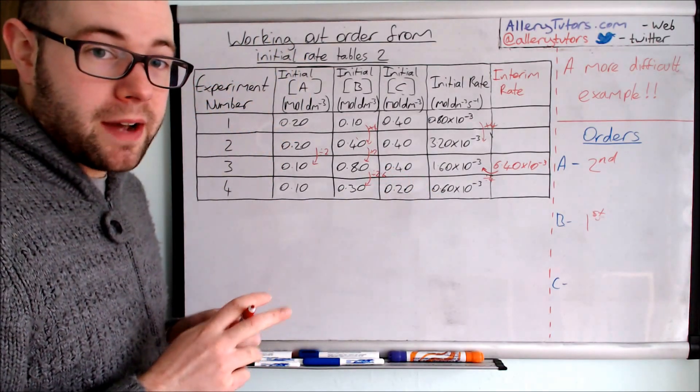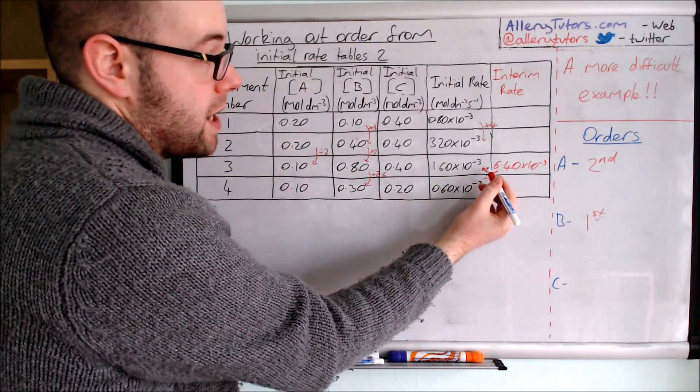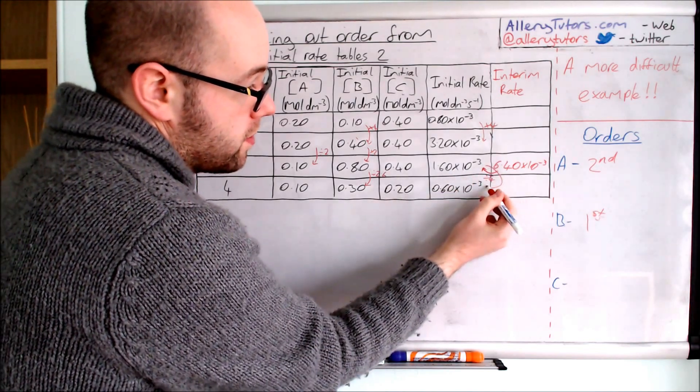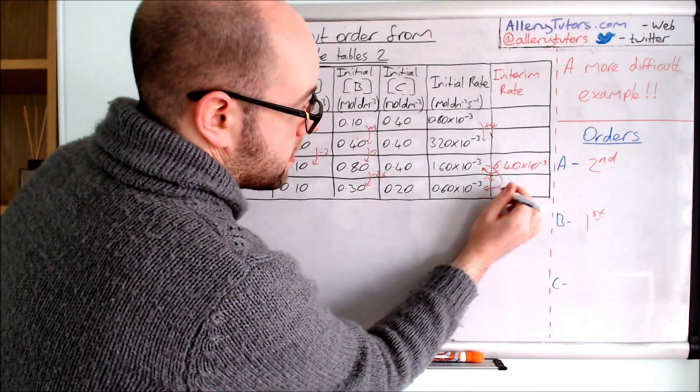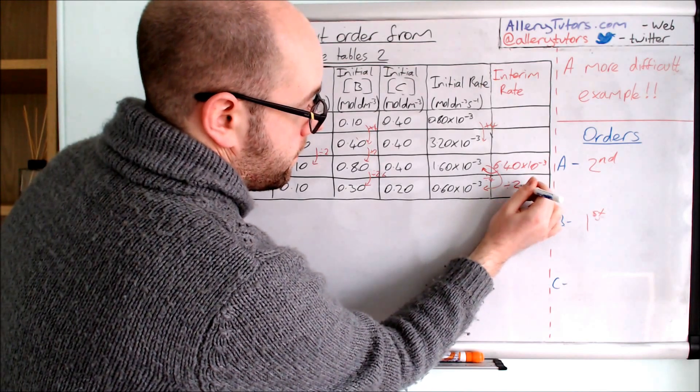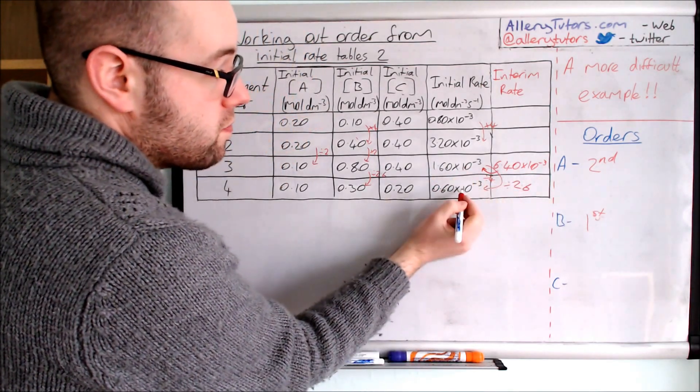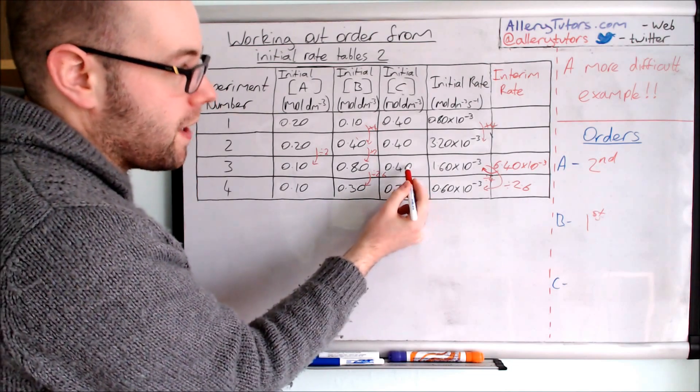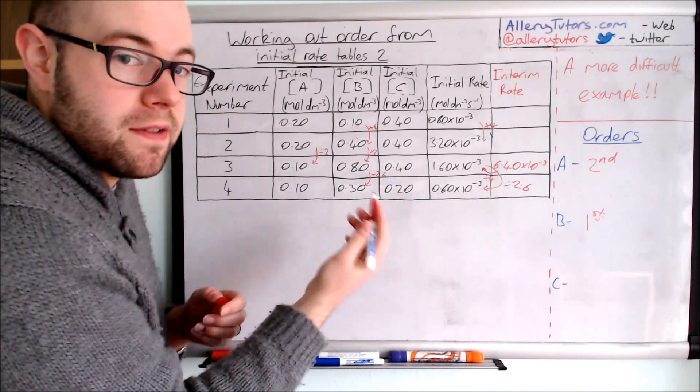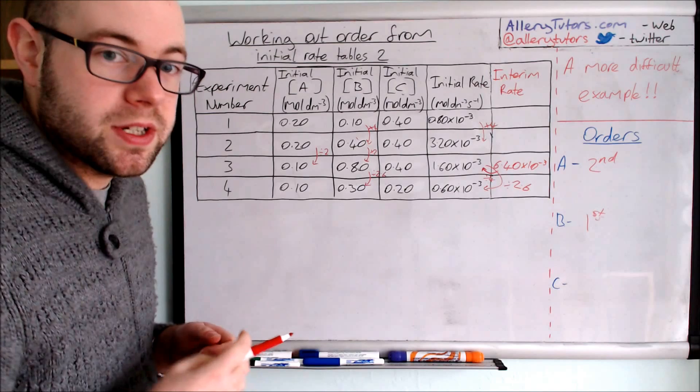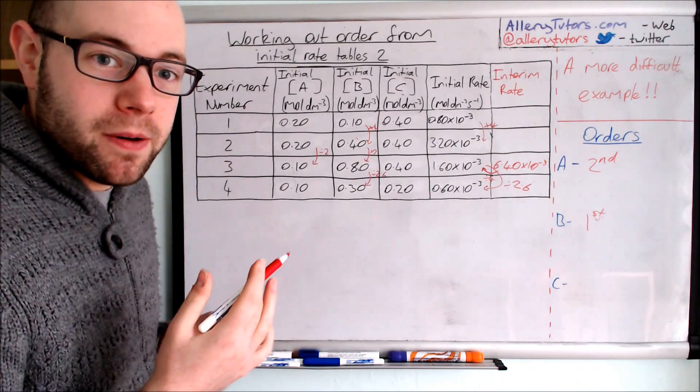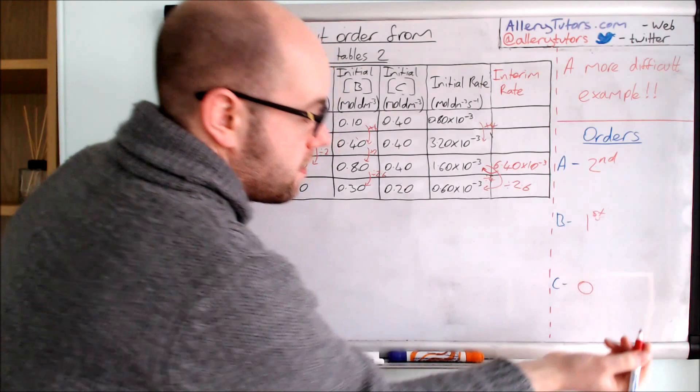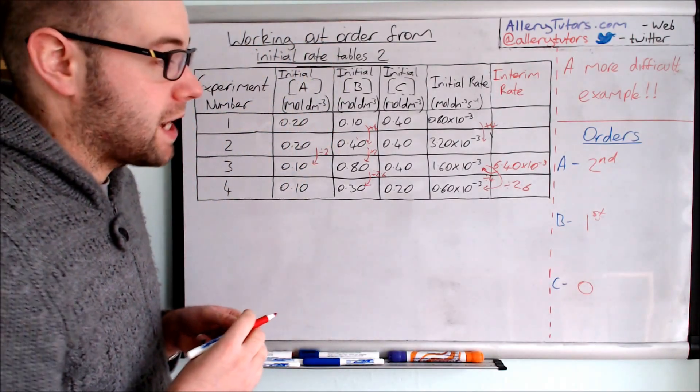Then we look at the rate over here. This one going from here to here is also divided by 2.6. So this change in rate is purely because of B. Now despite the fact that C is changing, it hasn't changed the rate any further. What that suggests to us is that C is actually zero order. In that case, we just put zero for C.